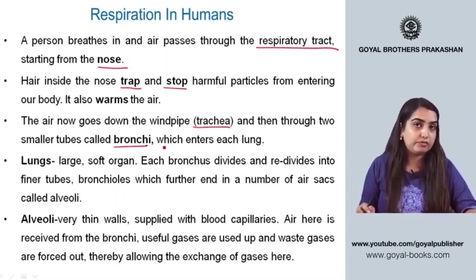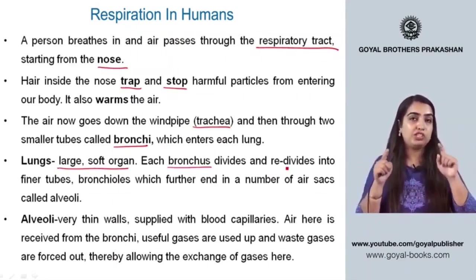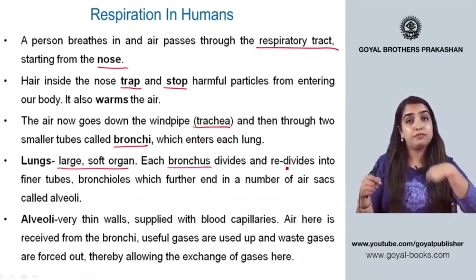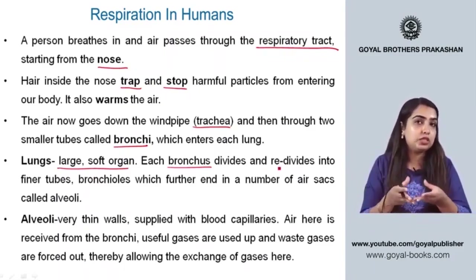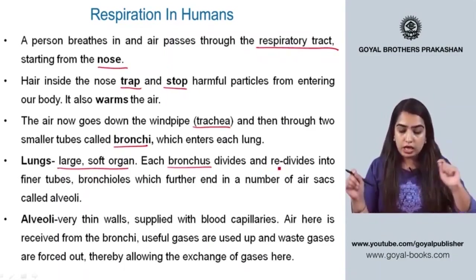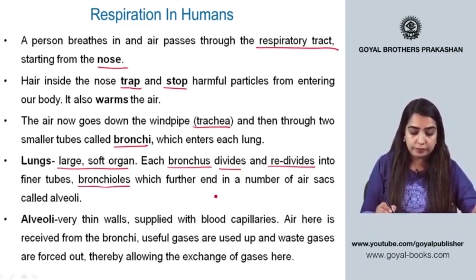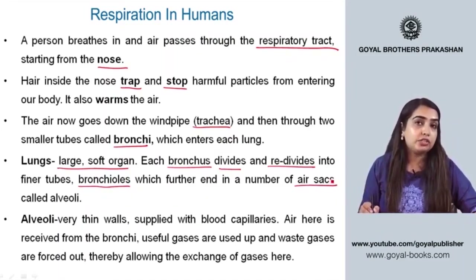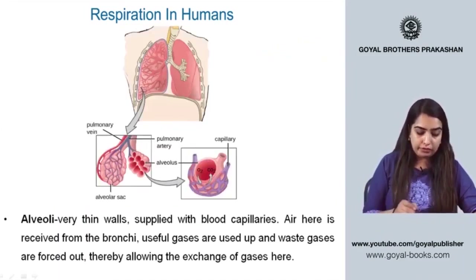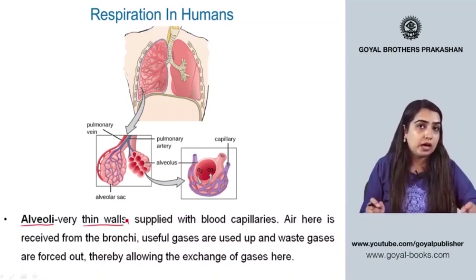The air then goes down the windpipe, also referred to as the trachea, and through two smaller tubes called bronchi, each entering one of the two lungs. Each bronchus — the singular of bronchi — divides and re-divides into finer tubes called bronchioles.